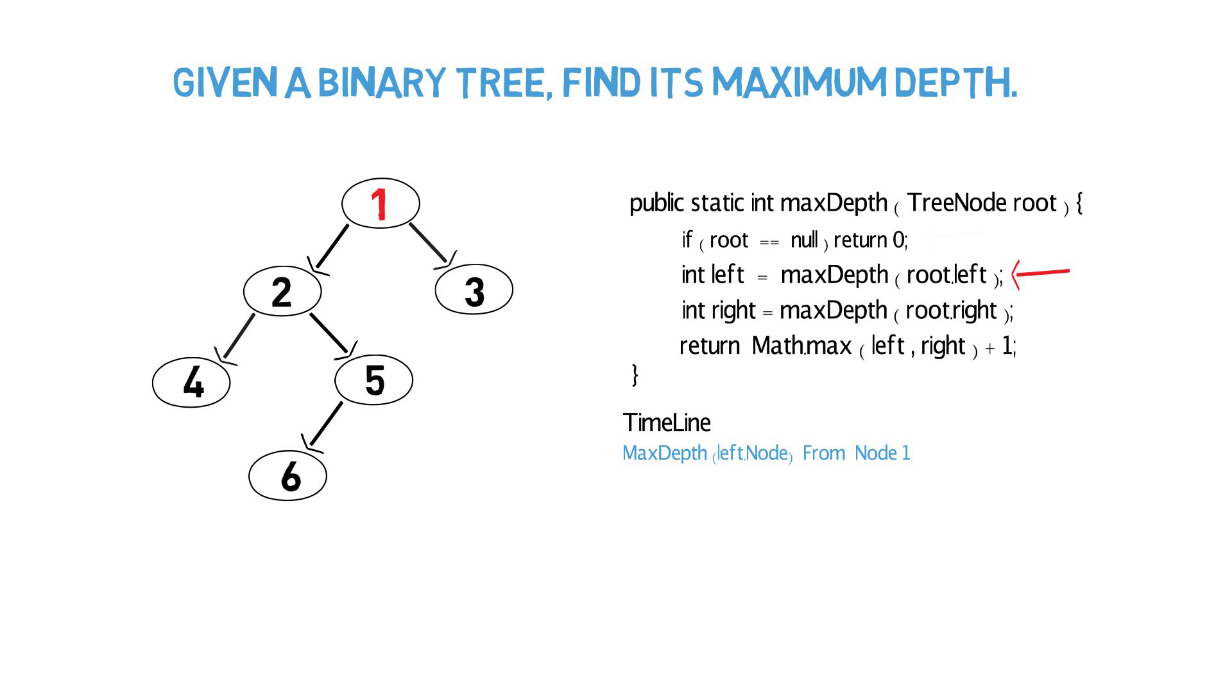So we pass in the left node of the root into maxDepth. This will move us down to node 2. Now we start the method over and check if the root is null. And just a reminder, when I refer to the root going forward, I am not talking about the root that I originally passed in for the entire tree. I am now referring to the node I passed in recursively. I can still refer to this as a root because technically, it is a root of another subtree that we will check.